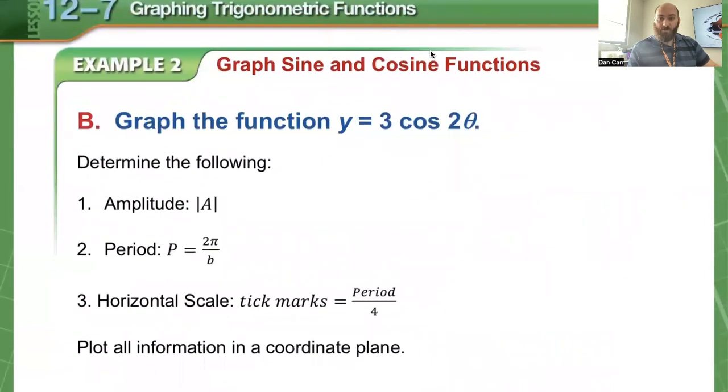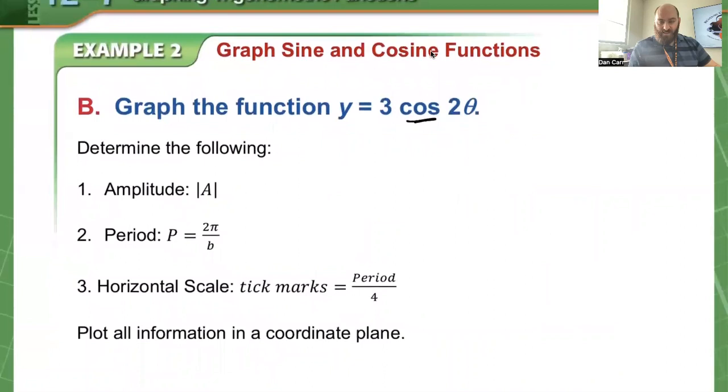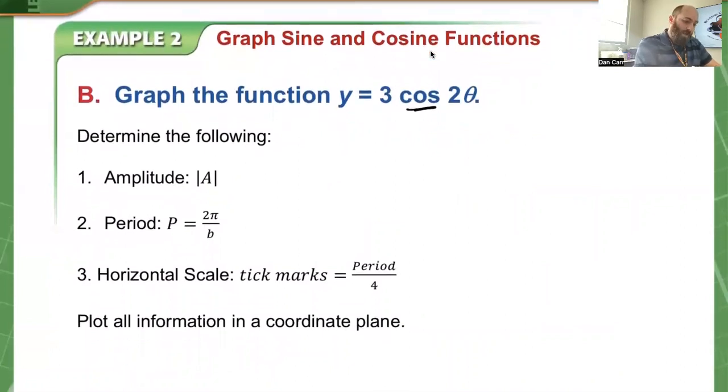We're going to go through this one: 3 times the cosine of 2 theta. I'm going to go a little quicker this time. It's cosine, so it starts differently. I'm just going to stick with radians. The amplitude is 3. The period is 2 pi divided by b. In this case, it's 2 pi divided by 2, because b is 2. So 2 pi over 2 is pi.